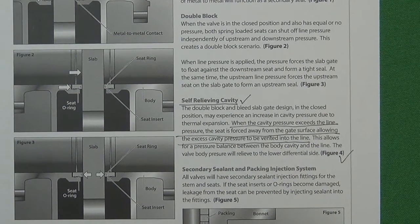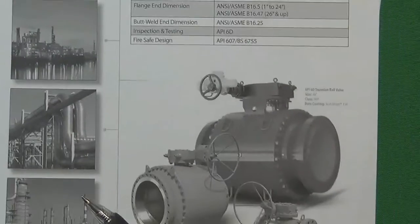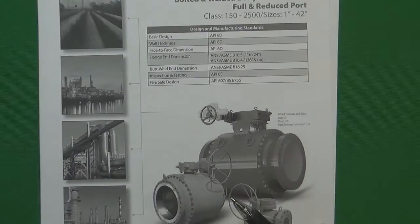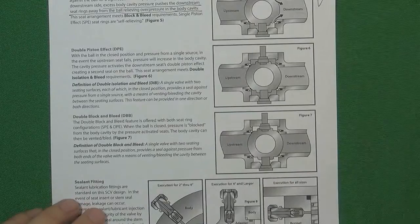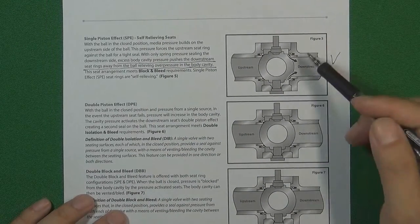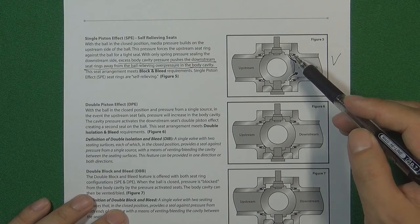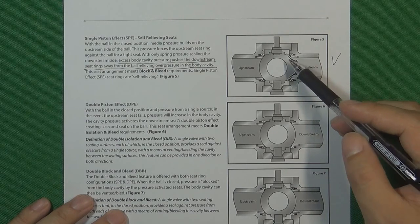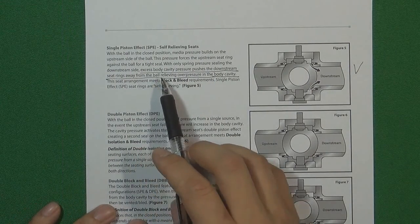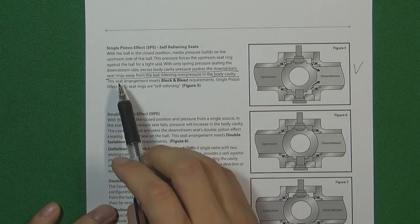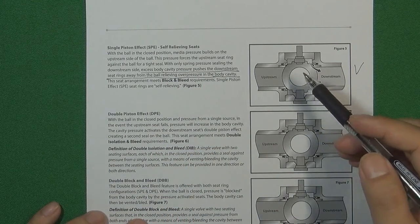According to the description, when relieving cavity pressure the seat is forced away from the gate surface, allowing excess cavity pressure to be vented into the line. The same principle applies to ball valves, which are also very commonly used in API 6D flow control systems and contain a very large cavity inside. If the inside cavity has excess pressure, the pressure pushes the valve seat back, leaving a gap between the seat and ball so pressure can relieve from the gap — excess body cavity pressure pushes the downstream seat rings away from the ball.